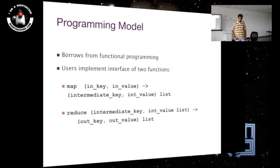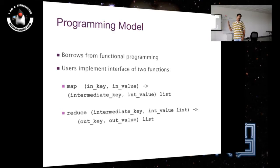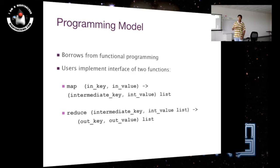The programming model for writing programs that use data on Hadoop is twofold: the map phase and the reduce phase. All our data is going to be in the form of key-value pairs. Sometimes the key doesn't carry a lot of significance — for example, if your input is a server log, you could use the line number as the key with the entire line as the value. The programming model requires the input to be in the form of a key and a value.